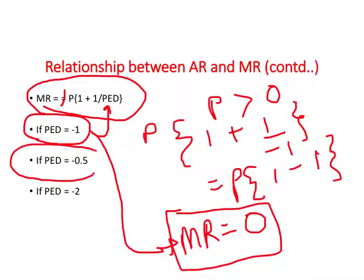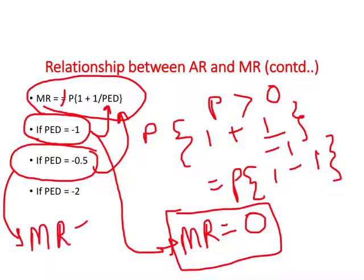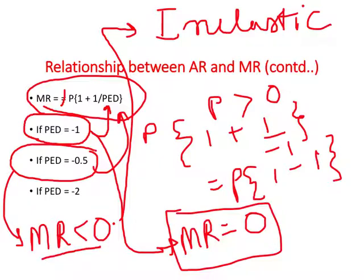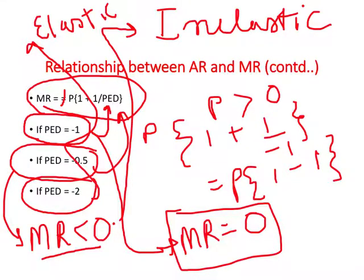Now let us try price elasticity of demand equal to negative 0.5. Plugging this number into the formula, you will find that marginal revenue turns negative. So when price elasticity of demand is less than 1 in absolute value — that is, when we have inelastic demand — marginal revenue is negative. When price elasticity of demand in absolute value is greater than 1 — that is, when we have elastic demand — plugging in the numbers shows that marginal revenue is positive.